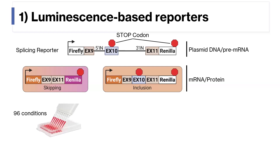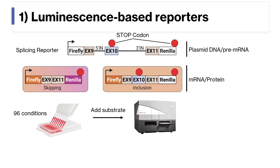We can therefore do really quick measurements of splicing changes across a bunch of different conditions. All we have to do is add substrate to each of our wells, run it through a plate reader, and measure both types of luminescence. By comparing how the ratio of ranilla to firefly changes across different conditions, we can test how these conditions influence splicing.